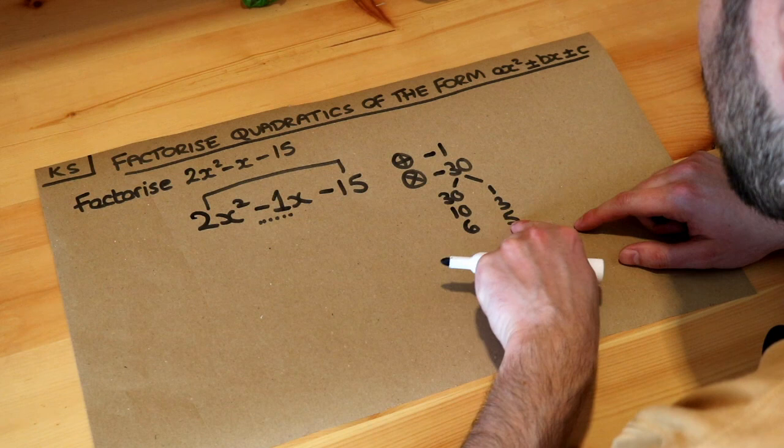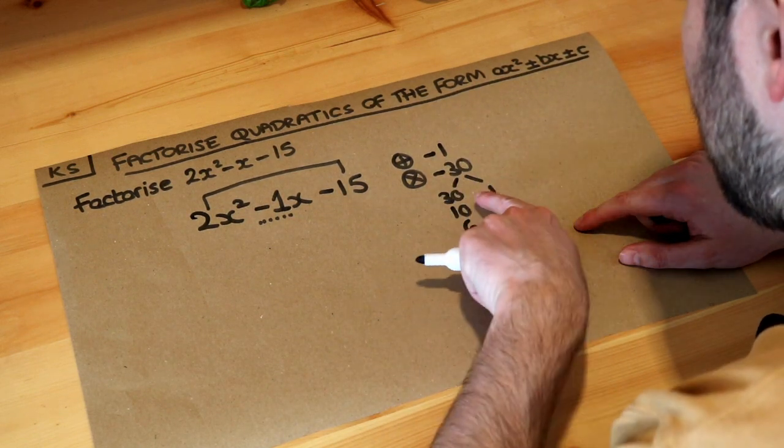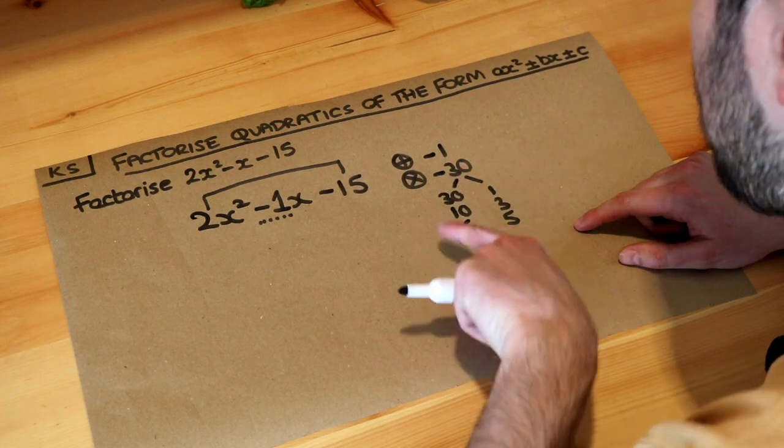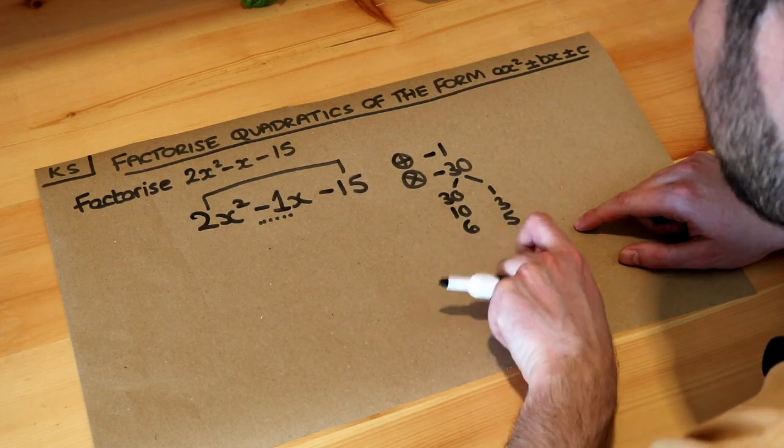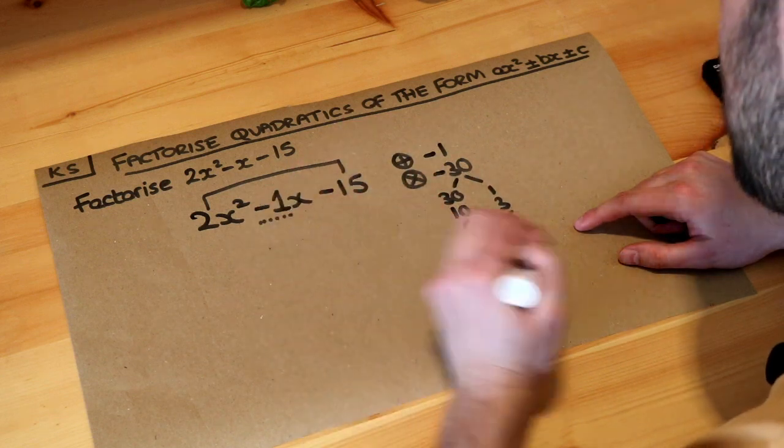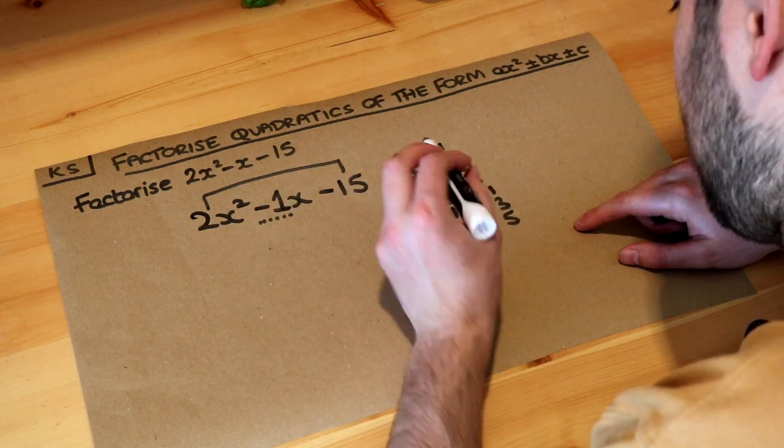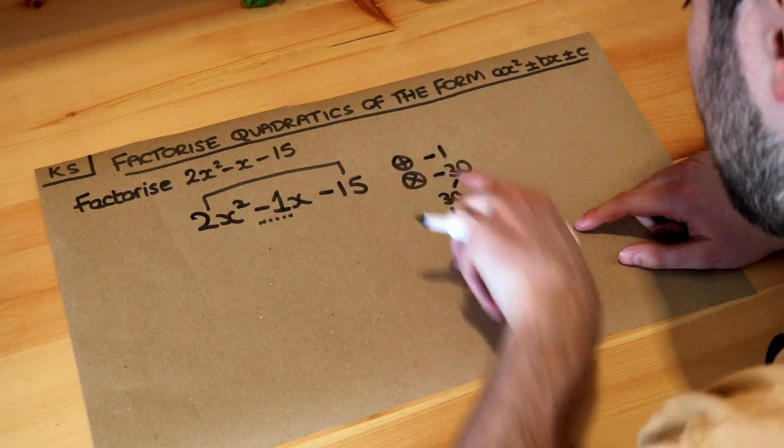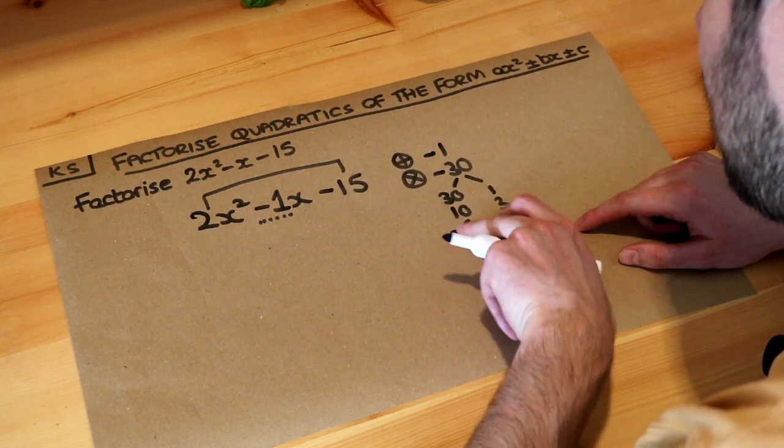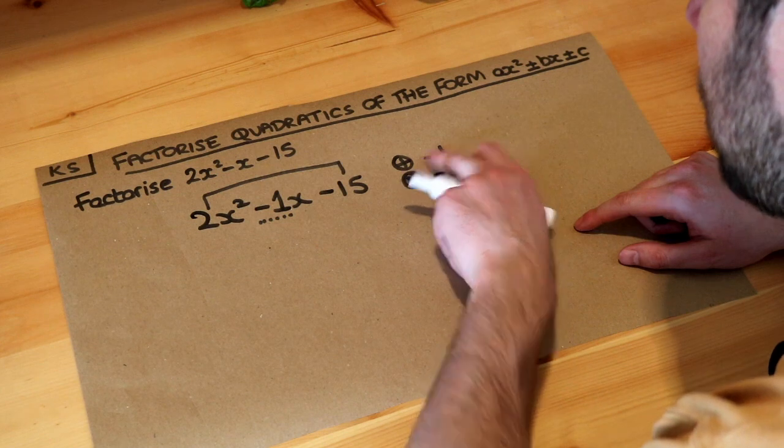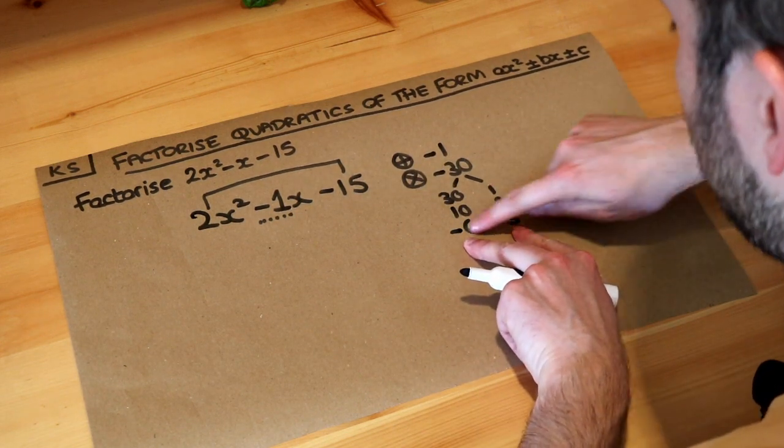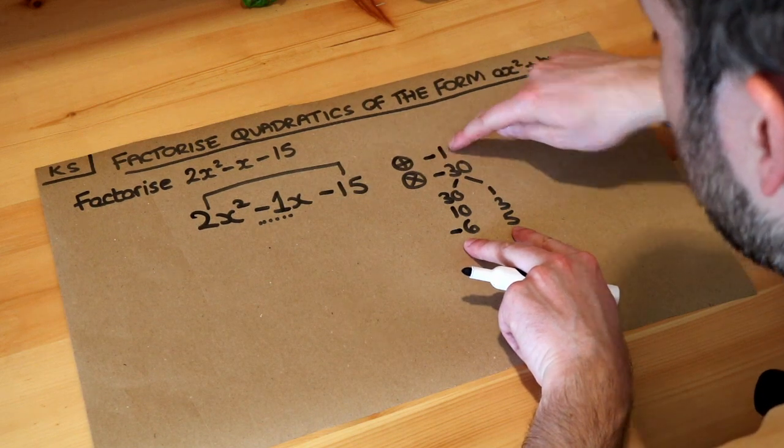What about 6 and 5? Oh, well, 5 minus 6 is minus 1. So notice, by the way, if these two numbers multiply to give minus 30, a negative number, one of these two has to be negative because negative times positive would be negative. Now, it's going to be the minus 6, isn't it? Because when we add these two numbers to get this number here, 5 plus negative 6 is just 5 minus 6 is minus 1. So look, these two numbers do multiply to give minus 30 and these two numbers do add to give minus 1.